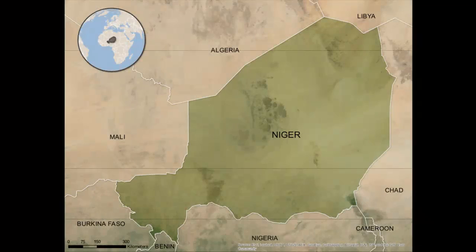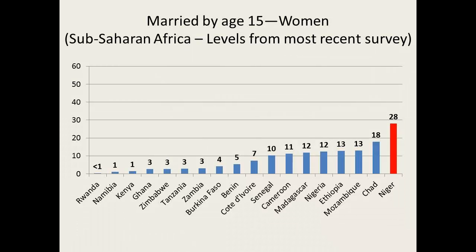Niger comes out as a very interesting case based on the data from this report. 26% of adolescent women in Niger seem to be having sex by age 15, which is the highest among all the countries included in this report. The case is the same for child marriage — a third of adolescent women in Niger are married by age 15. We would assume that most of the adolescent women having sex are within the context of marriage.